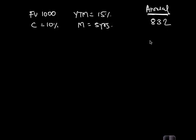If we assume semi-annual compounding instead, then FV = 1000, PMT = 50, I/Y = 7.5%, and N = 10. Compute the present value — the result is 820.